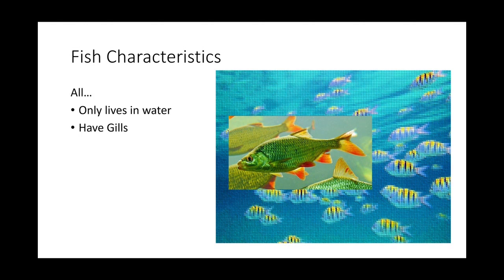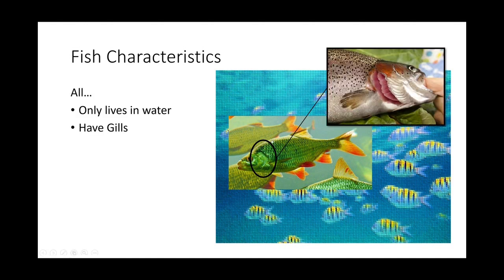Most of you should know what gills are — you can find them on a fish's head, and at the market you can see the inside when the gills are opened. Fish also have scales, which are a hard outer covering that protect them from injury like armor. Most fish reproduce by laying eggs, though some can give birth.